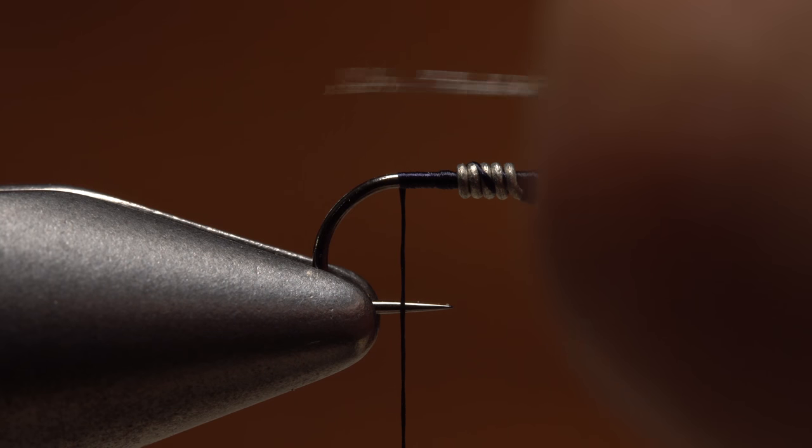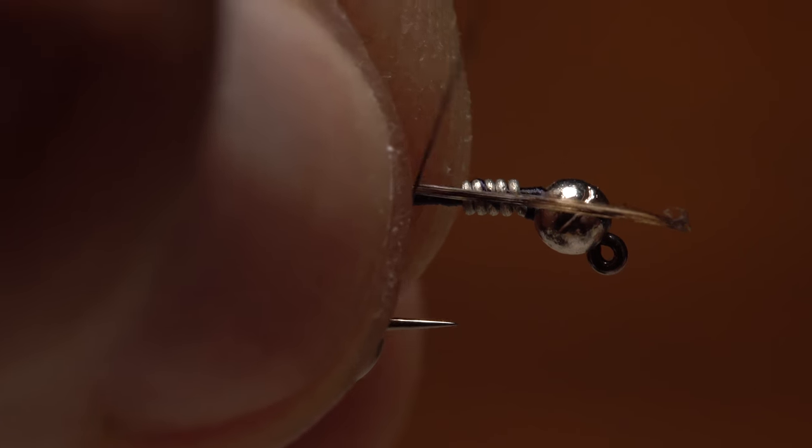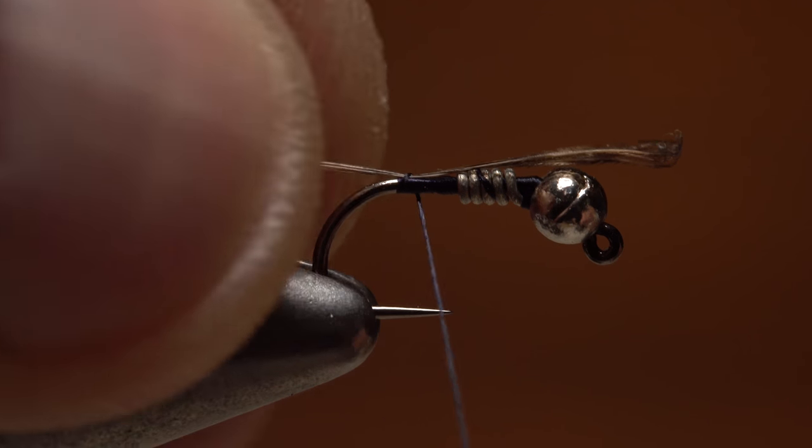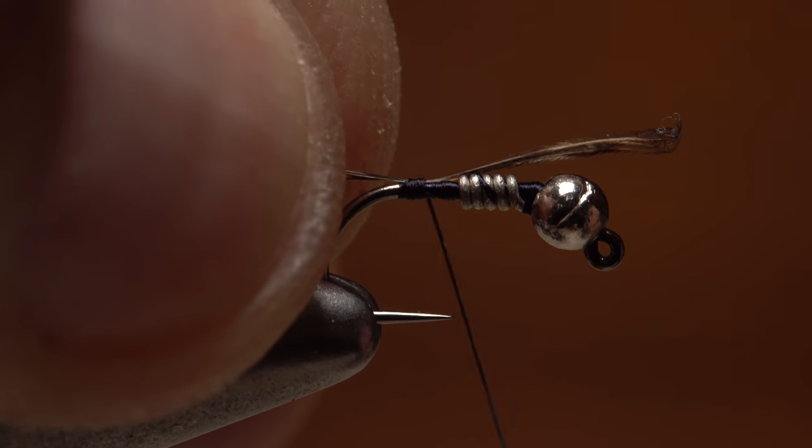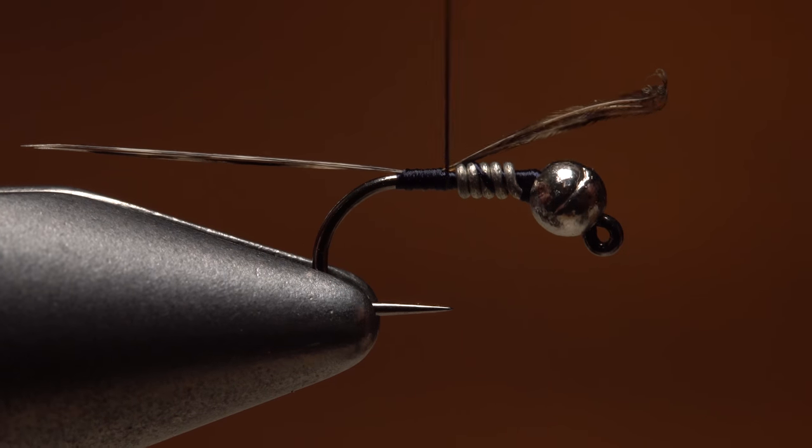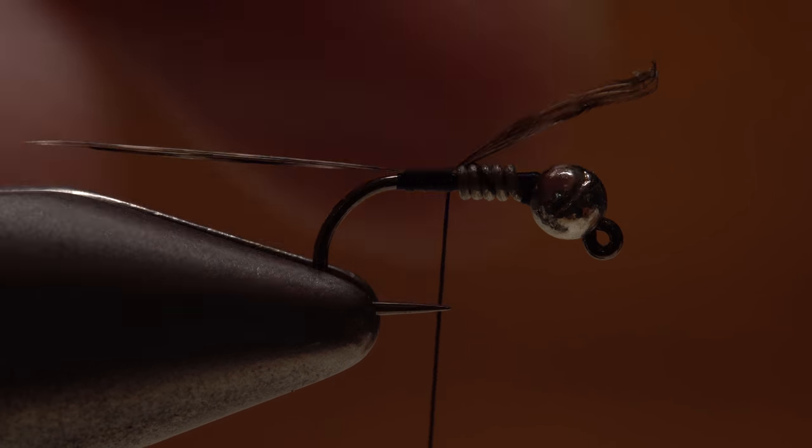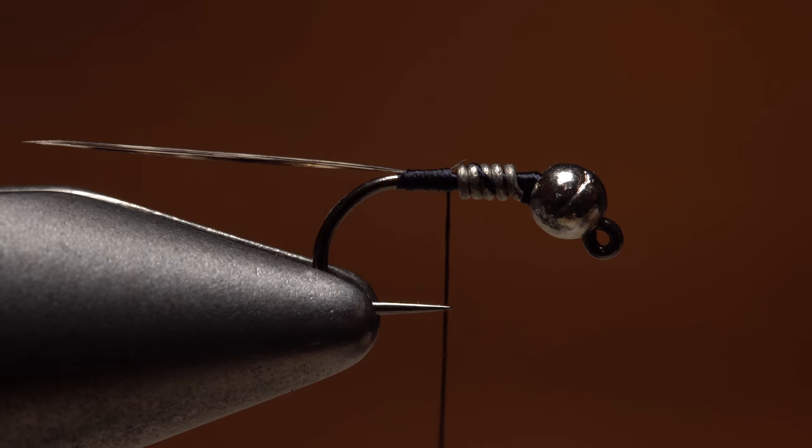Measure to form a tail of full hook in length, and transfer that measurement rearward to the start of the bend. Use a pinch wrap to secure the fibers directly to the top of the hook shank, and take wraps forward until you reach the wire. You can then snip the excess butt ends of the fibers off close.